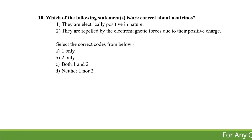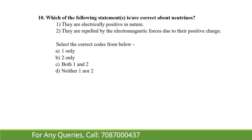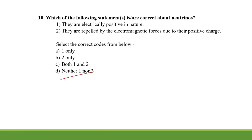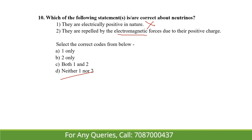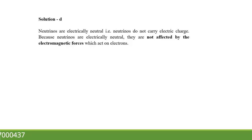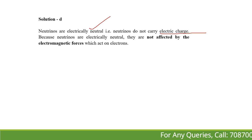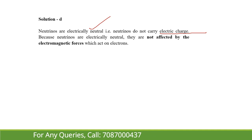Which of the following is correct about neutrinos? First, they are electrically positively charged in nature. Second, they are repelled by electromagnetic forces due to their positive charge. Both are wrong — neutrinos are electrically neutral; they have no charge. Unlike protons or electrons (which are negatively charged), neutrinos are completely without charge, so electromagnetic forces have no effect on them either.